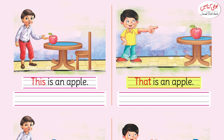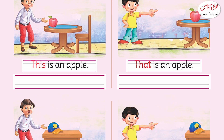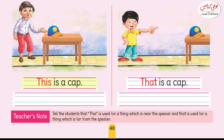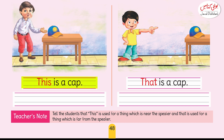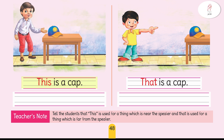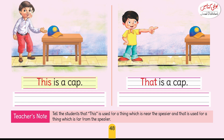Dear children, now you have to copy that sentence and write it in the space. The next picture is of a boy who has a hat, and the hat is on the table. Tell me — is the cap close to the boy? Yes, it is close to him. So what do we use for nearby things? 'This.' So: 'This is a cap.' You have to copy this sentence and write it in the space.